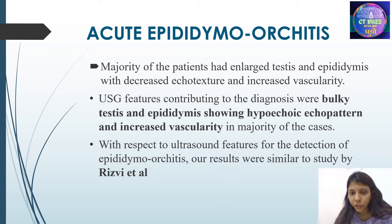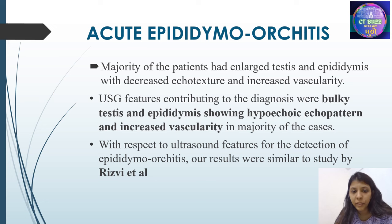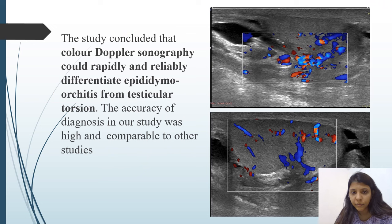Acute epididymal orchitis: majority of the patients had enlarged testis and epididymis with decreased echotexture and increased vascularity. USG features contributing to the diagnosis were bulky testis and epididymis showing hypoechoic echopattern and increased vascularity in majority of the cases. On ultrasound, color Doppler sonography could rapidly and reliably differentiate epididymal orchitis from testicular torsion.